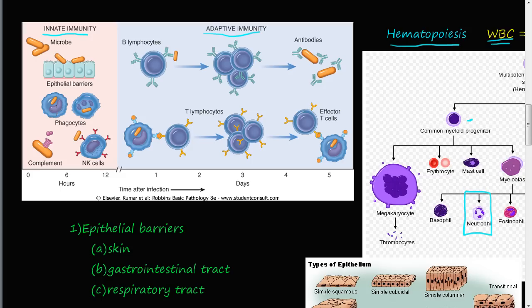The first part is epithelial barriers: skin, the gastrointestinal tract, and the respiratory tract. These protect us from microbes, which are everywhere — in our food, air, and water. The epithelial barriers protect us from the vast majority of these microbes.